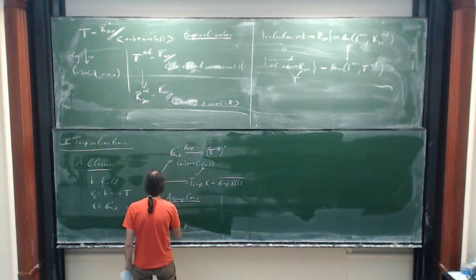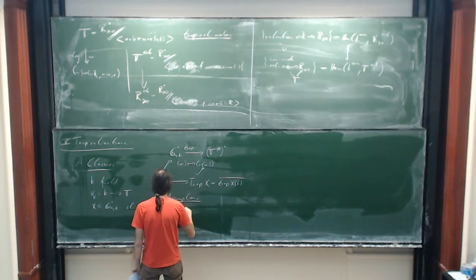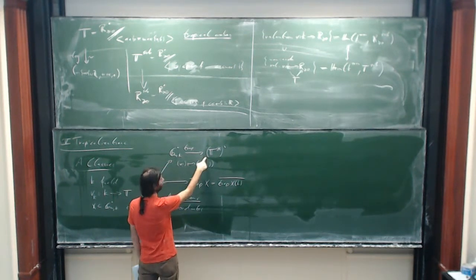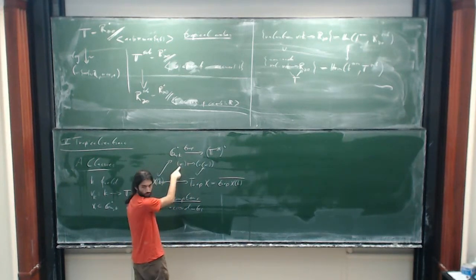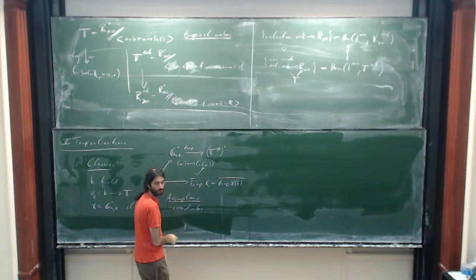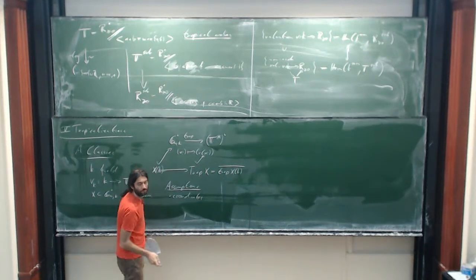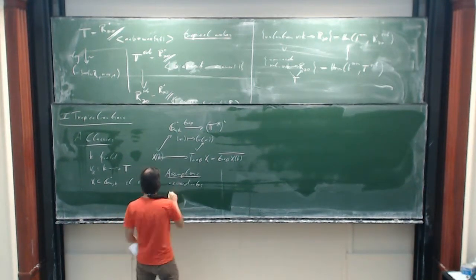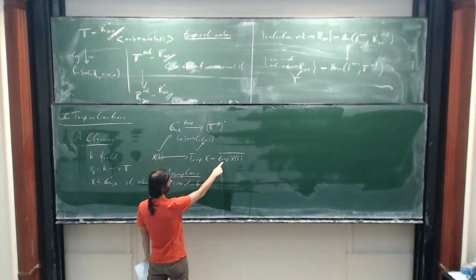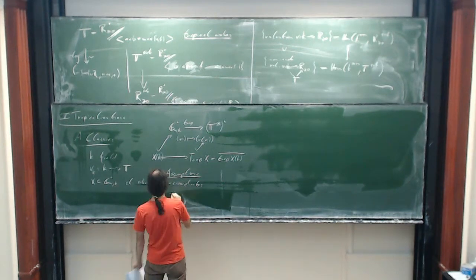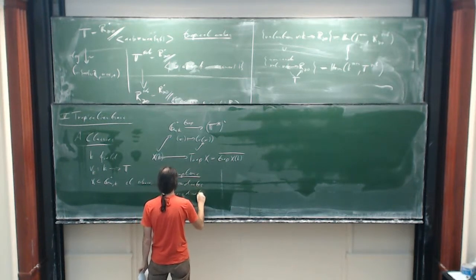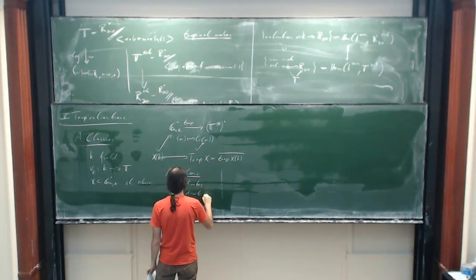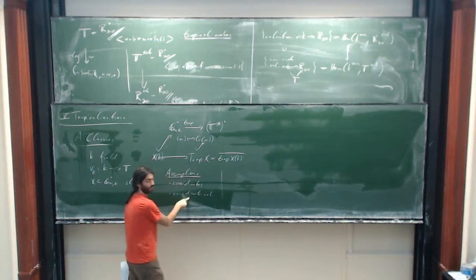There are two important assumptions to make this work. First, we need coordinates — this is really essential, and will give us the blueprint structure in the end. The other thing is, to avoid something trivial, you want a non-discrete valuation.